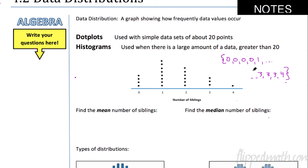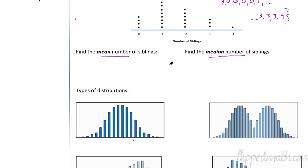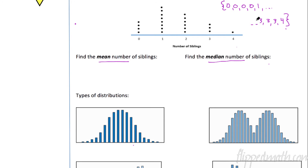Pause the video — I want you to find the mean number of siblings from the dot plot and the median number of siblings. When you add all the numbers together, you get 33. Remember how to find the mean: add them all up and divide by the number of data points. I found there to be 22 data points, so 33 divided by 22 equals 1.5 siblings. That is the mean number of siblings.